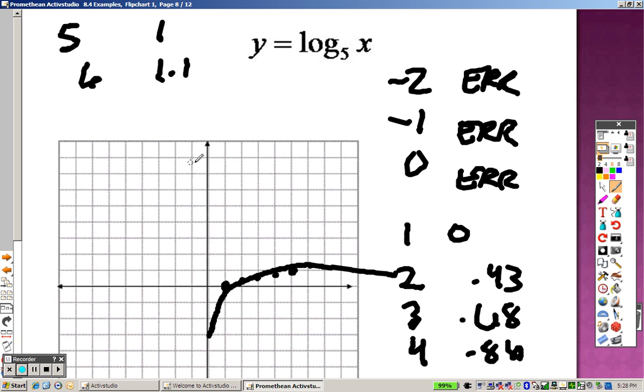Well guess what? Know how in the other ones, exponential functions, we had asymptotes that were horizontal? Well, now we have asymptotes that are vertical. So this asymptote is at x equals 0. That's where that asymptote is at.